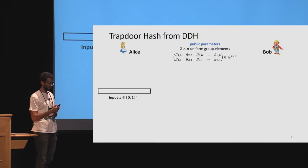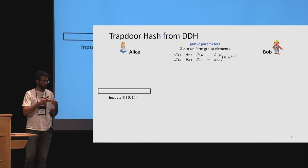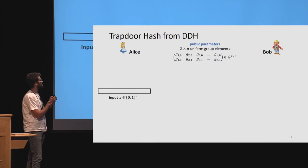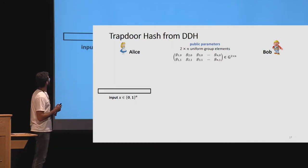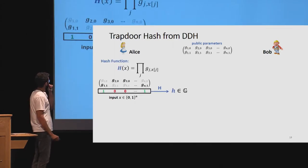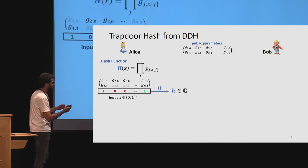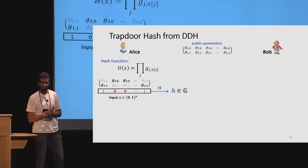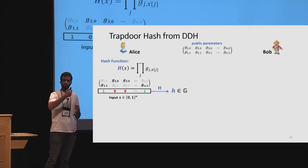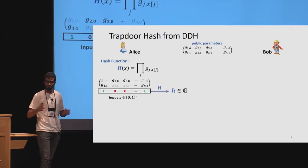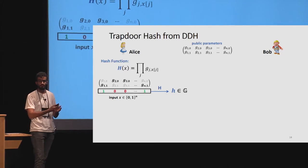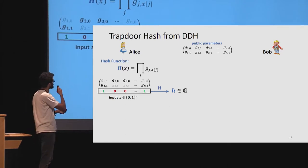The public parameters are 2n uniform group elements arranged in a 2×n matrix. The hash function works as follows: Alice goes over every column of the public matrix and takes the top group element if the corresponding input bit is zero, and the bottom group element if it equals one. She collects these n group elements, multiplies them all, and gets a hash value — a single group element equal to this product.